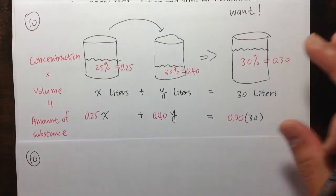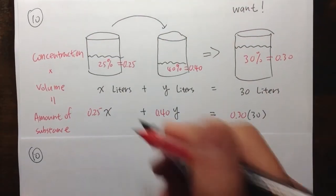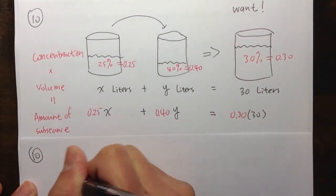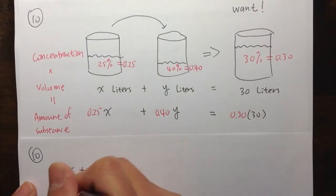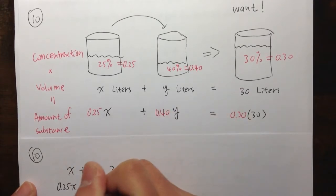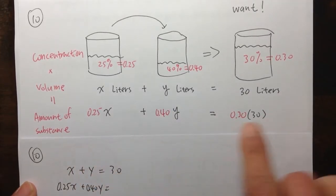You still set up the same equations. And then, we still have the same two equations, x plus y is equal to 30. And then, 0.25x plus 0.40y is equal to 0.30 times 30, which is 9.